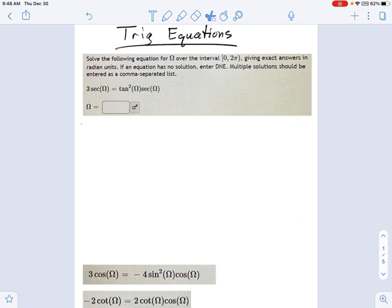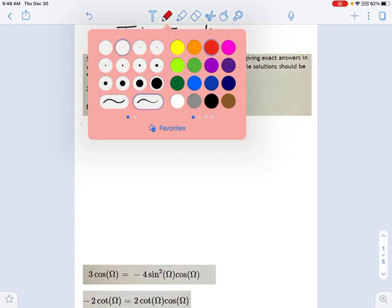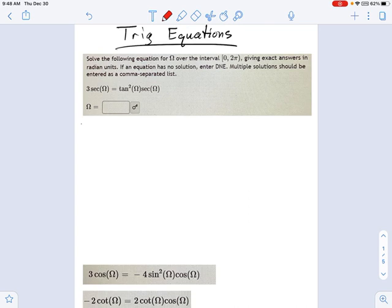I'm going to start off with this guy up top here, this three secant equation. Solving trig equations is a lot like any other equation. You want to factor it generally. So the first thing I'm going to do is rewrite this as 0 on one side equals tangent squared omega minus 4 sine squared omega secant omega. And here's that 3 secant, which I've subtracted over to the right side, so I can get 0 on the left.